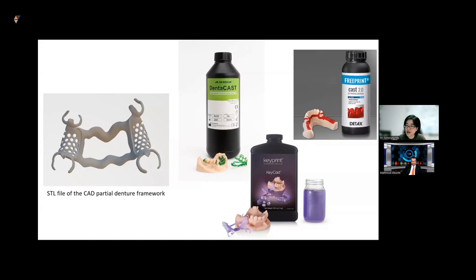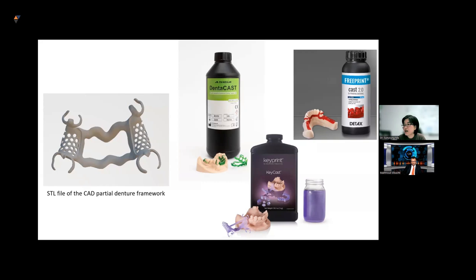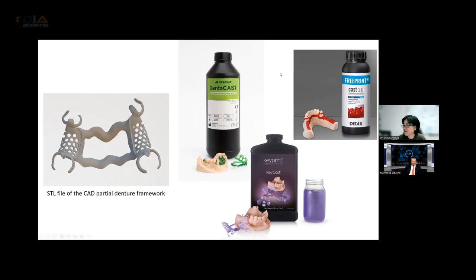Once designed, you'll get an STL file of the partial denture framework. At this point you can decide whether to continue with a fully digital workflow or incorporate a hybrid workflow. This can be printed using a 3D printer — many clinicians and dental technicians have embraced benchtop 3D printers. There's a lot of data on how to ensure the angulation of printing is done correctly to give additional accuracy for your casting.